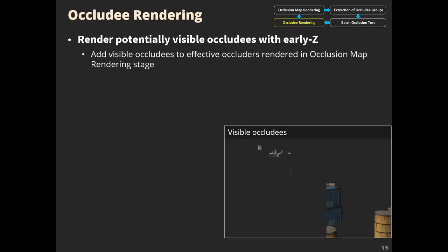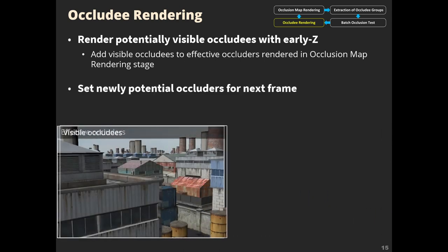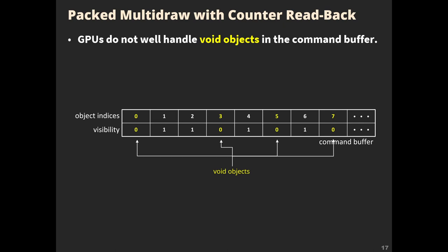Finally, we render the actual geometries of the potentially visible occludees. After rendering all visible occludees, we merge them with the potential occludees to initialize the next frame rendering. In addition to our basic algorithm, we present two acceleration techniques. The multi-draw processes a command buffer filled for the entire objects in a single batch, which greatly reduces driver overhead on GPUs. For culling, we set the instance counters for occluded objects to zero.